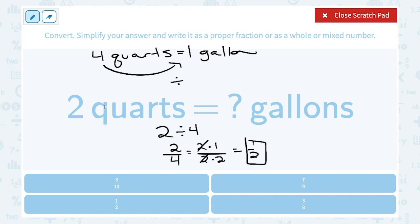Another way you could think of that: you could say, well, two quarts is half of four quarts. So the number of gallons should be half of one or half a gallon.